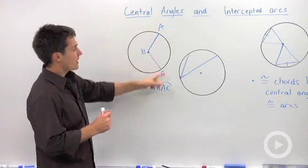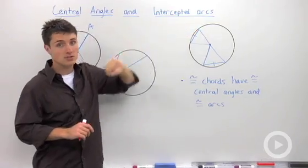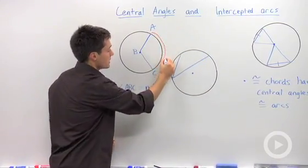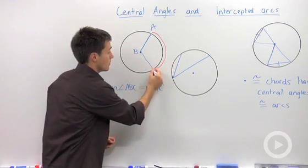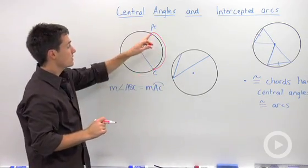We call that arc AC the intercepted arc, just like a football pass intercept. So from A to C, notice those are also the places where the central angle intersects the circle.